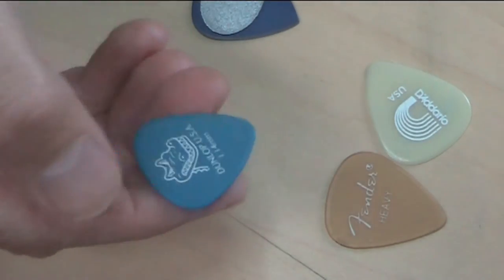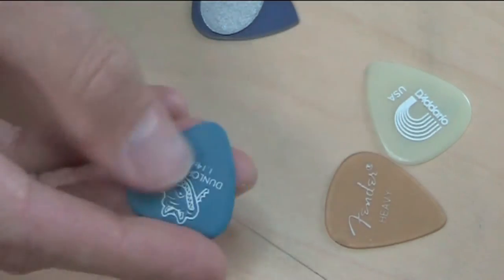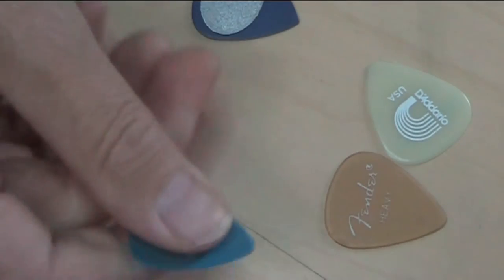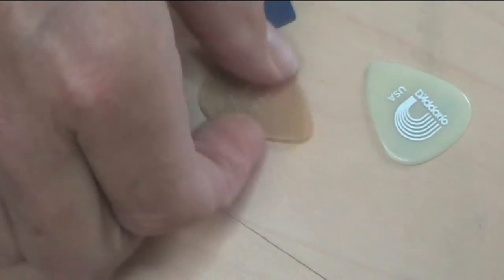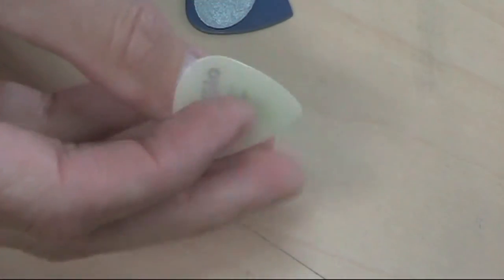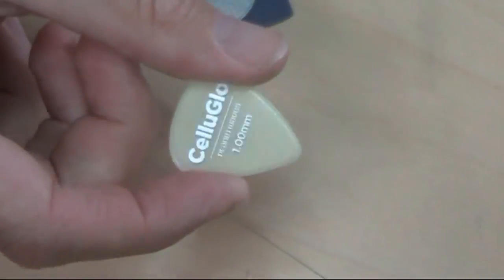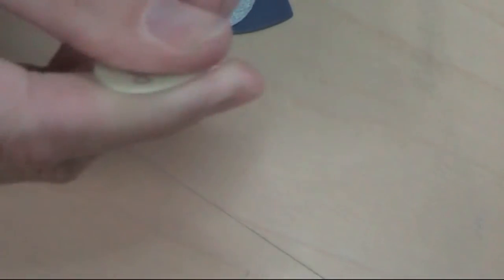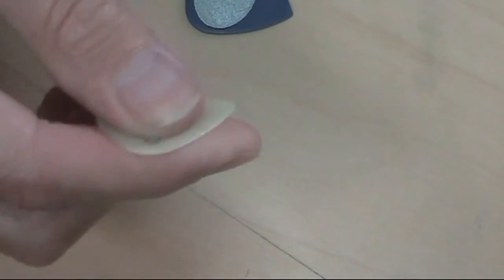This one is, again, this is a Dunlop one, a Gator grip one. Again, I'd say it's the same as the Tortex one, it feels the same. Fender, it slips out of my fingers. This Diadrio one, the one you can see in the dark. I like the way they feel when I'm playing, but again, they just slip out of my fingers.